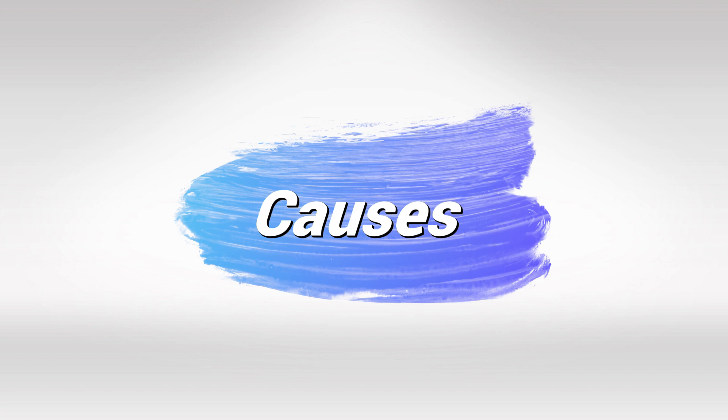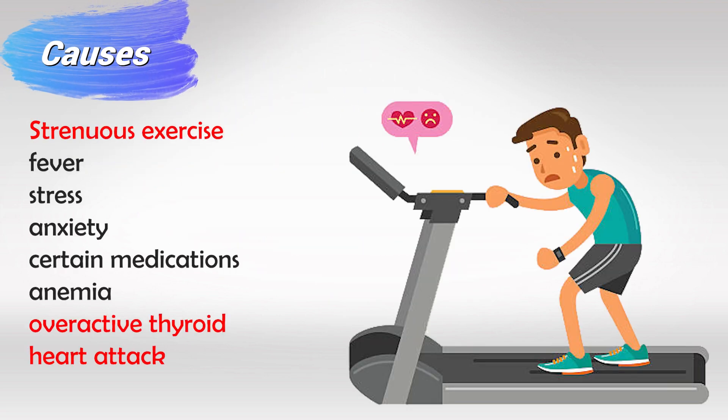To know the causes, think of anything that would cause somebody to be anxious or to increase their heart rate. So: exercise, fever or any illness or infection that causes fever, stress or anxiety, some medications, anemia — in anemia the patient needs more blood circulating so the heart has to contract faster — overactive thyroid, and early signs of a heart attack.